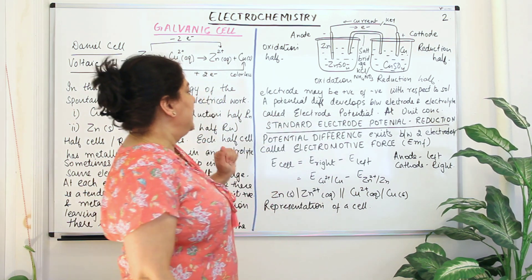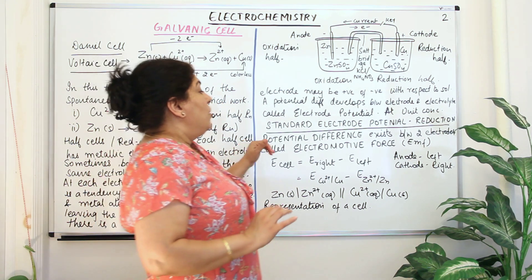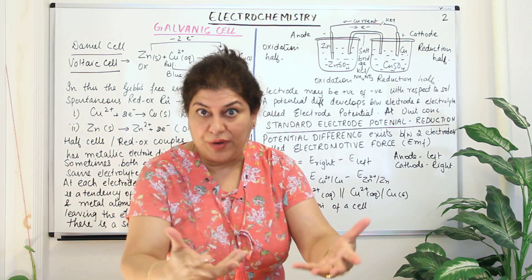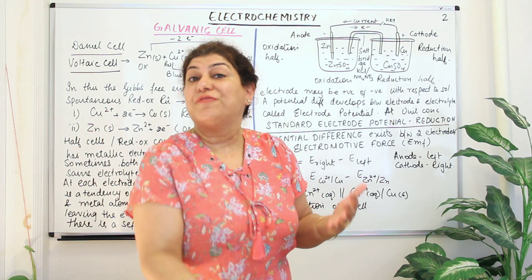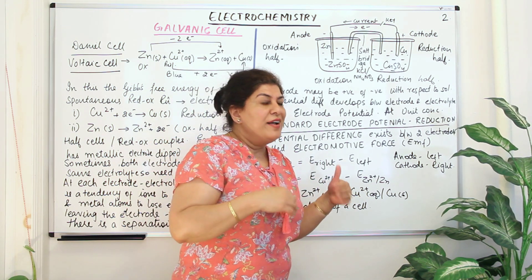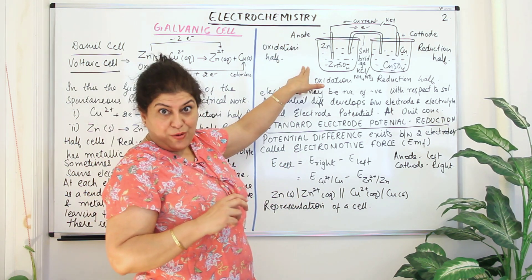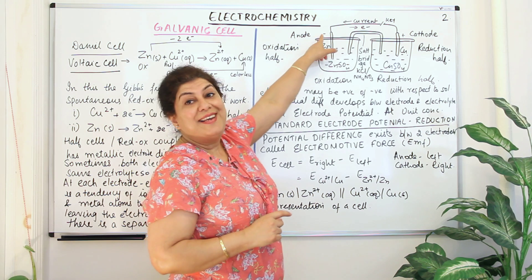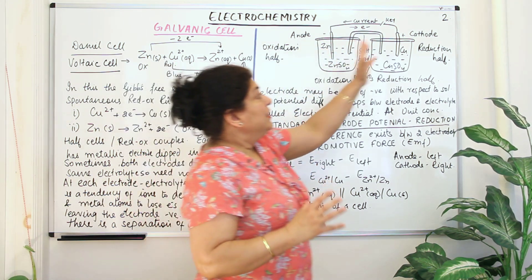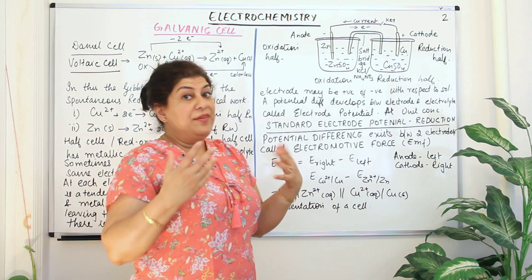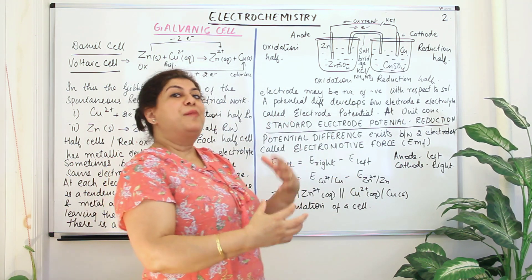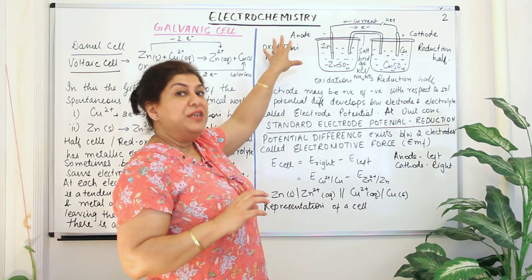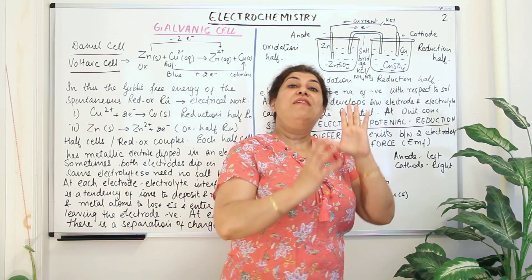So when we compare the standard electrode potentials, we are talking only of the reduction potential. The more the reduction tendency, the more positive the value will be; lesser the reduction tendency, the more negative the value will be. Oxidation occurs at the anode, so its reduction potential should have a negative value. At the cathode, reduction is occurring, so it has a positive value. Therefore the potential at the anode will have a negative value, and the potential at the cathode will have a positive value.